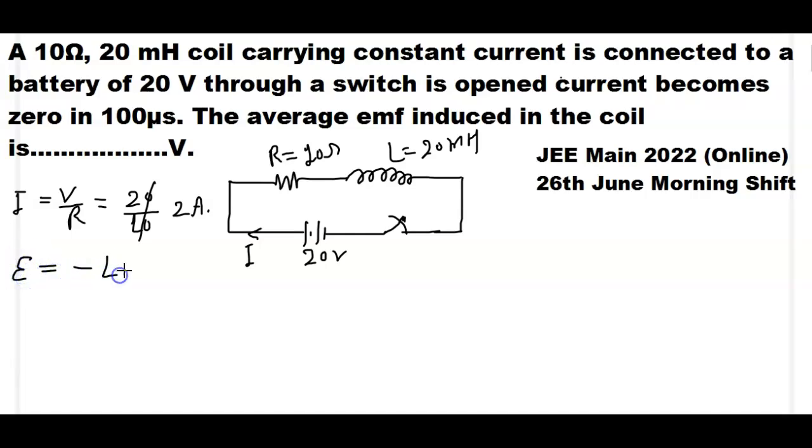So back EMF is given by E equals minus L times di divided by dt. Where di means change in current, dt means change in time, L means inductance, and E means EMF.